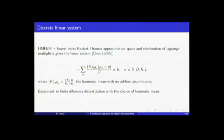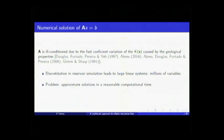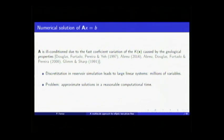We obtain this system for the pressure — it is symmetric definite positive and its coefficients depend on the permeability of the medium. If we have a fast variation of these coefficients, the matrix is ill-conditioned and really hard to solve. Also, since we're talking about oil recovery problems, we see that for the scales of the reservoirs, it tends to lead to very large linear systems with millions of variables. The computation time usually grows, and we want to do that in a Monte Carlo formulation.